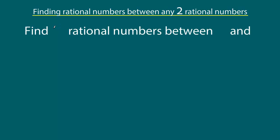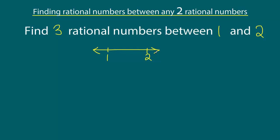Let's say we want to find three rational numbers between the number one and number two. One way to visualize this is to draw an imaginary number line. On our number line, one will be somewhere over here, and the number two will be somewhere over here. Our strategy is to use the average method and find out the three rational numbers. First, we are going to take an average of number one and number two, and find out the midpoint between one and two.